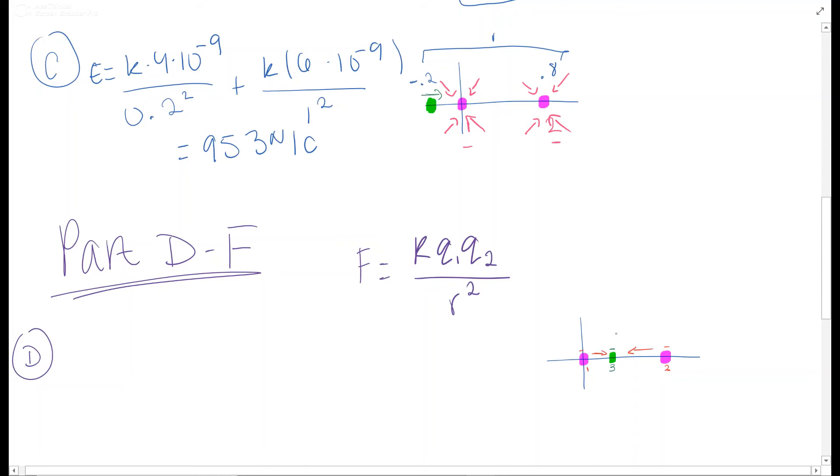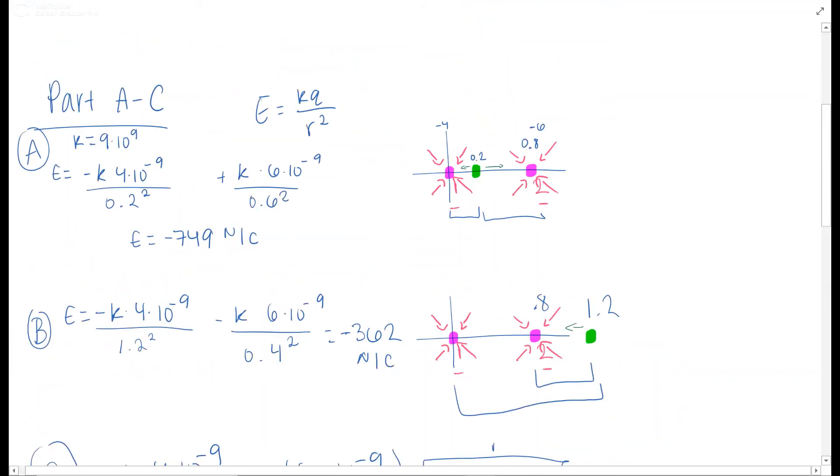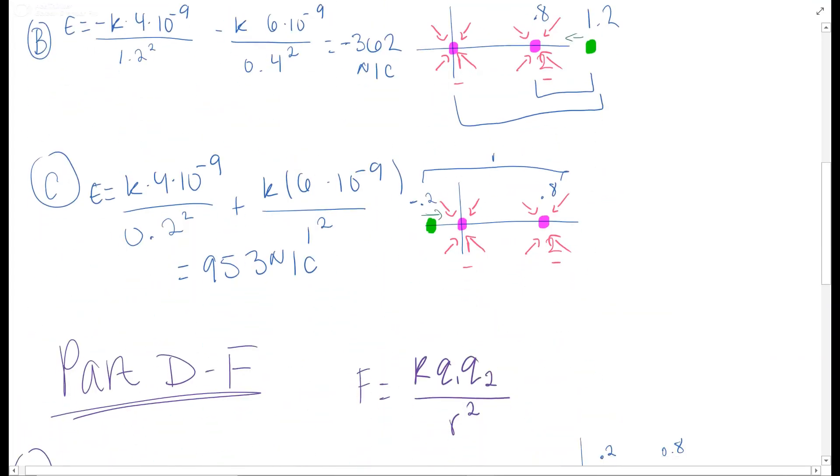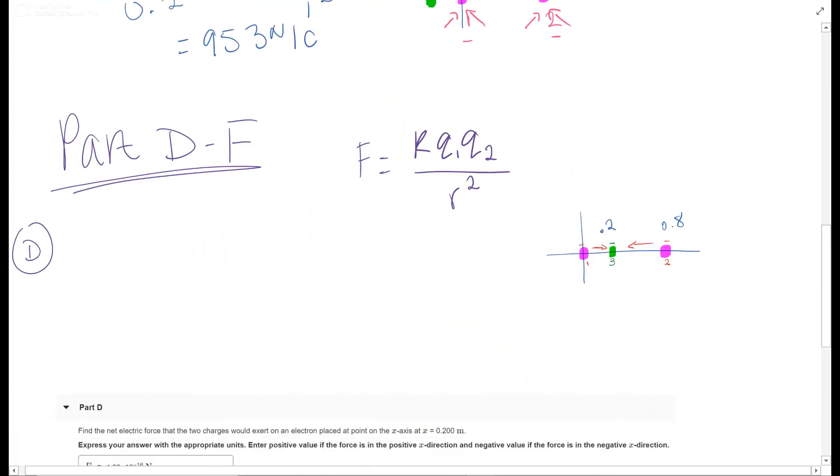We go back over here to where we have 0.2 and at 0.8. So for D, it's basically the exact same thing, but now you're using both your charges. And I believe it says an electron, which is important because you need your electron charge, which is 1.602 times 10 to the negative 19th. And it is totally negative because it is an electron.